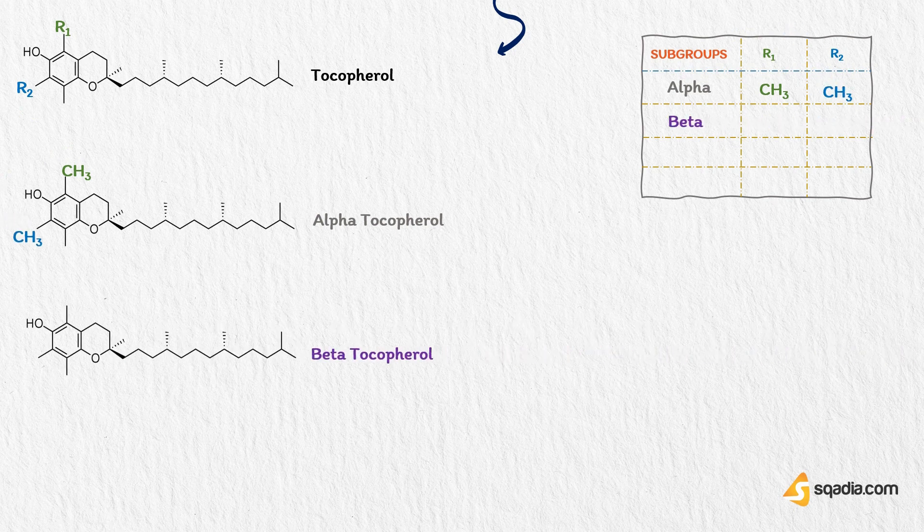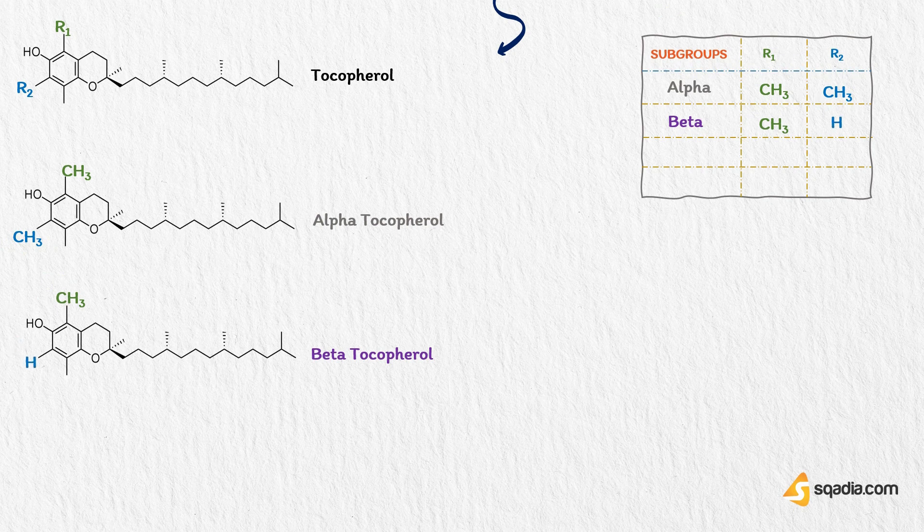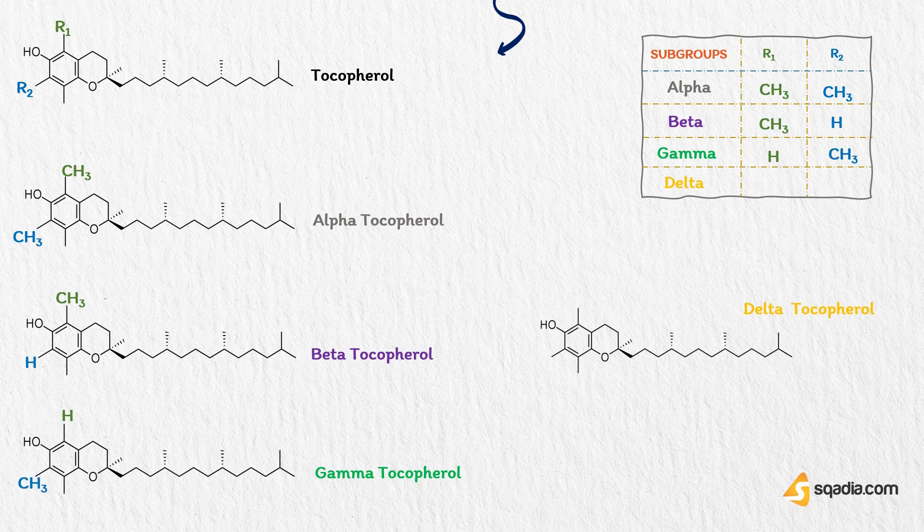In case of beta-tocopherol, R1 is CH3 and R2 is H. In the structure of gamma-tocopherol, R1 is H and R2 is CH3. While in case of delta-tocopherol, R1 is H and R2 is also H.